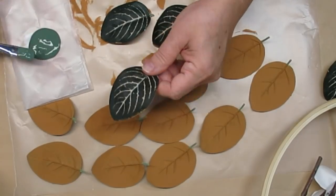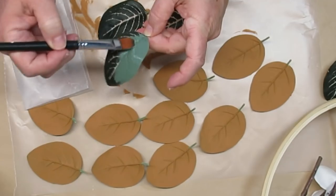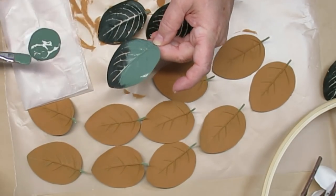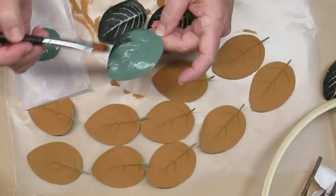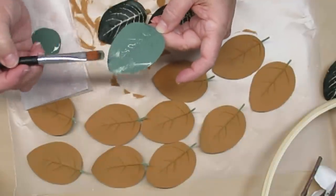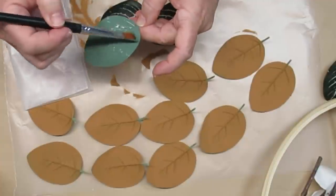Once those are dry I'm going to now paint the front just with some hunter green acrylic paint. I do have a little bit of talc in here to make it more of a chalk paint so I only need to do one coat, but you can see that with this color on the front and that orange color on the back they're turning into magnolia leaves.